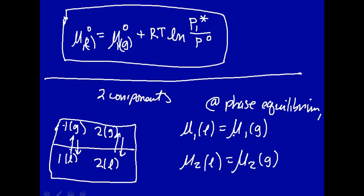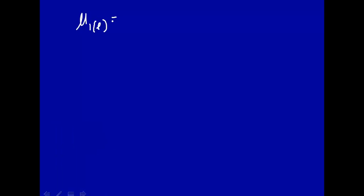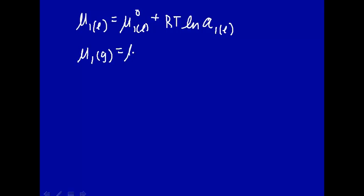Let's go ahead and put some expressions in here, just for component one. The chemical potential of component one in the liquid phase will be the chemical potential of one in the liquid phase at standard state, plus RT times the natural log of the activity of one in the liquid phase. Now for a pure component the activity was one, but now since we have two components, the activity in the liquid phase is no longer one. And then the chemical potential of one in the gas phase is the chemical potential of one in the gas phase at the standard state, plus RT times the natural log of the activity.